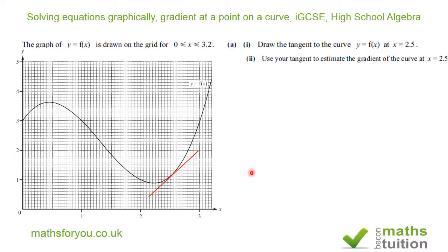My rise is from there to there, which gives me a value of 1.6 on the y-axis, and my run gives me a value of 0.85 on the x-axis. To find the gradient, I divide my rise of 1.6 by my run of 0.85, which gives 1.88.